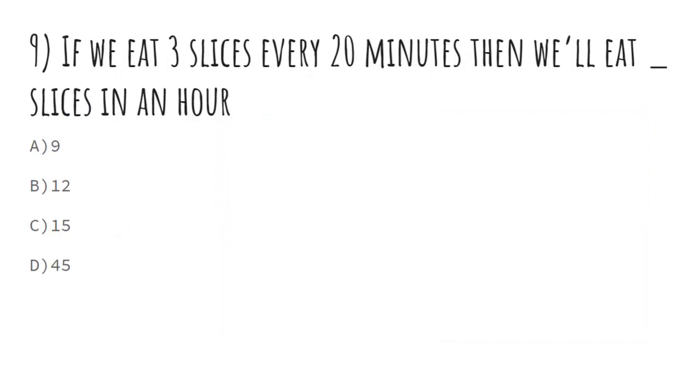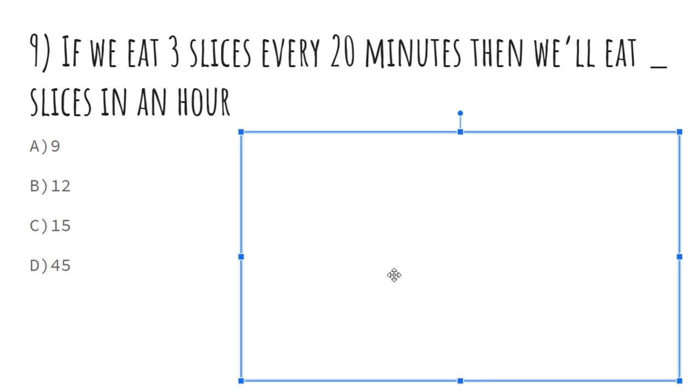Nine: if we eat 3 slices every 20 minutes, then we'll eat blank slices in an hour. So there are 60 minutes in an hour, so how many 20-minute periods go into an hour? So 20 times 3 equals 60. So that would be an hour, and because you multiply minutes by 3, you have to multiply slices by 3. And 3 times 3 equals 9, so our answer would be A: 9.